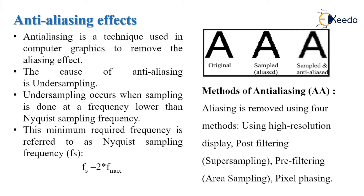The Nyquist sampling frequency formula is: Fs equals twice of Fmax. So the sampling frequency must be at least twice the highest frequency, where Fmax is the highest frequency and Fs is the sampling frequency. As we have seen in the figure of the letter A, there is an original A, a sampled A which has the aliasing effect, and if we remove that aliasing effect by performing anti-aliasing, we smooth the edges of the letter A to get smooth curves and smooth lines.